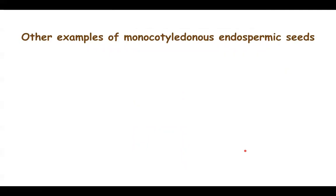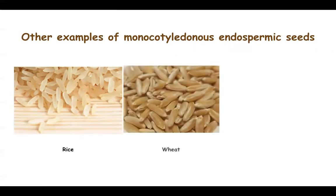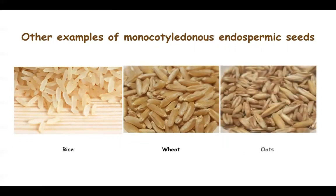Other examples of monocot endospermic seeds are rice, which has one single cotyledon and endosperm that provides nutrition; wheat, also a monocot endospermic seed; and oats, also an example of monocot endospermic seeds.